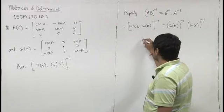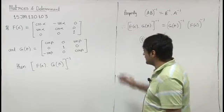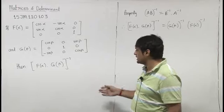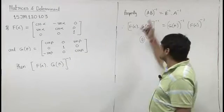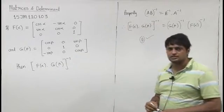So we'll check the options - option D is correct. If we want, we can also check this by properly multiplying and taking inverse, but it will take a lot of time. So using this property, D is the correct answer.